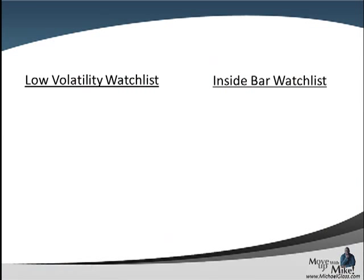As we move to our watch list, first we have our low volatility watch list, which is our one-hour time frame with our Bollinger bands. We're going to continue to watch the dollar/franc as we talked about earlier in our video, and we're going to watch the euro/yen. For our inside bar watch list, there are none for today.